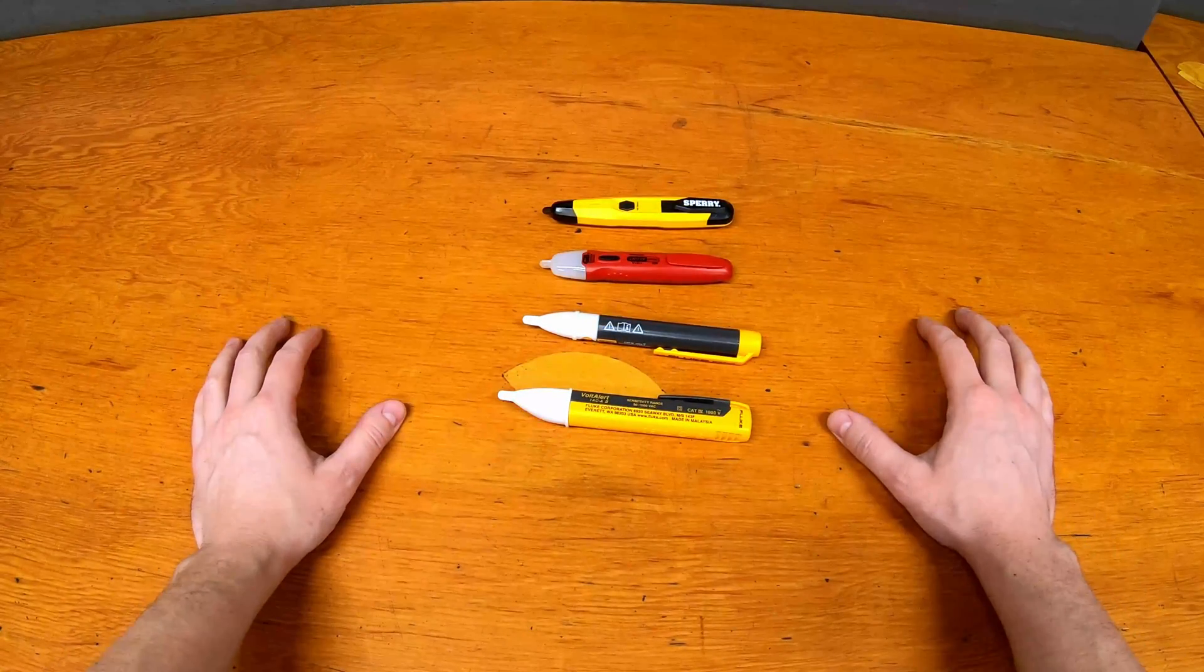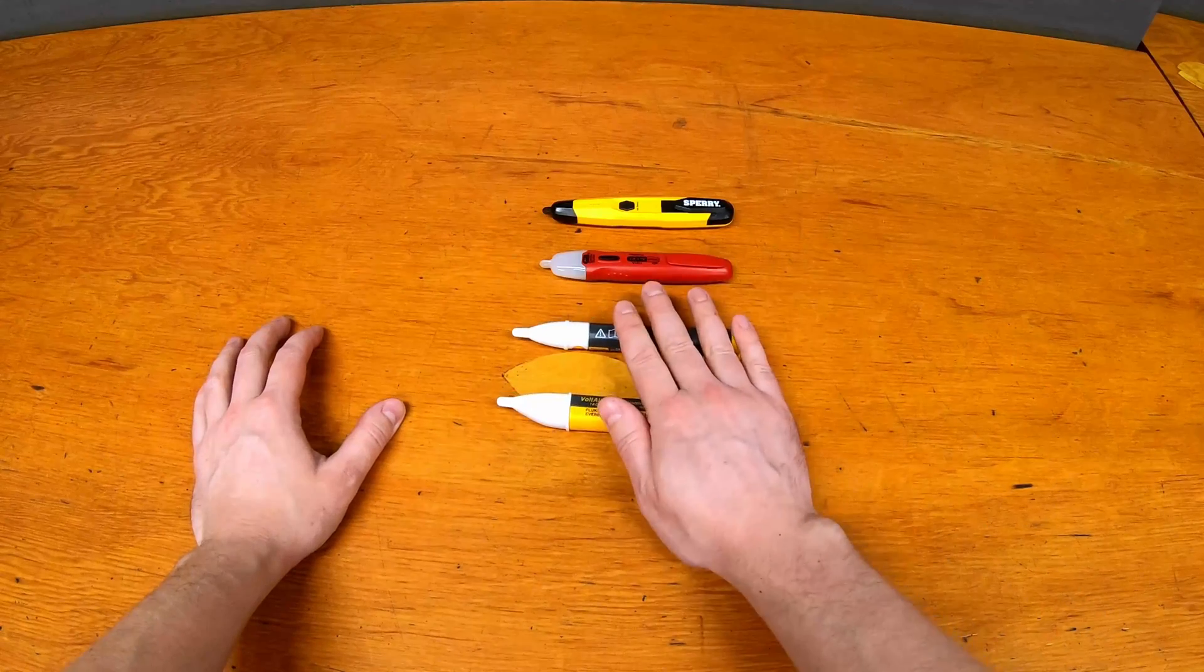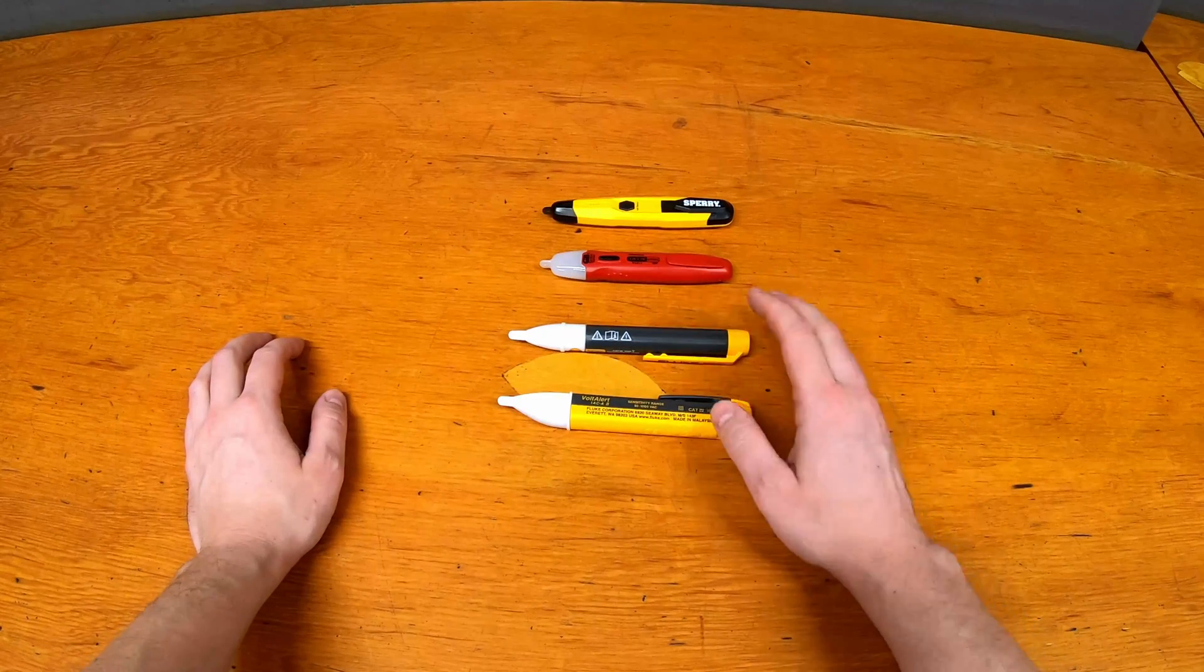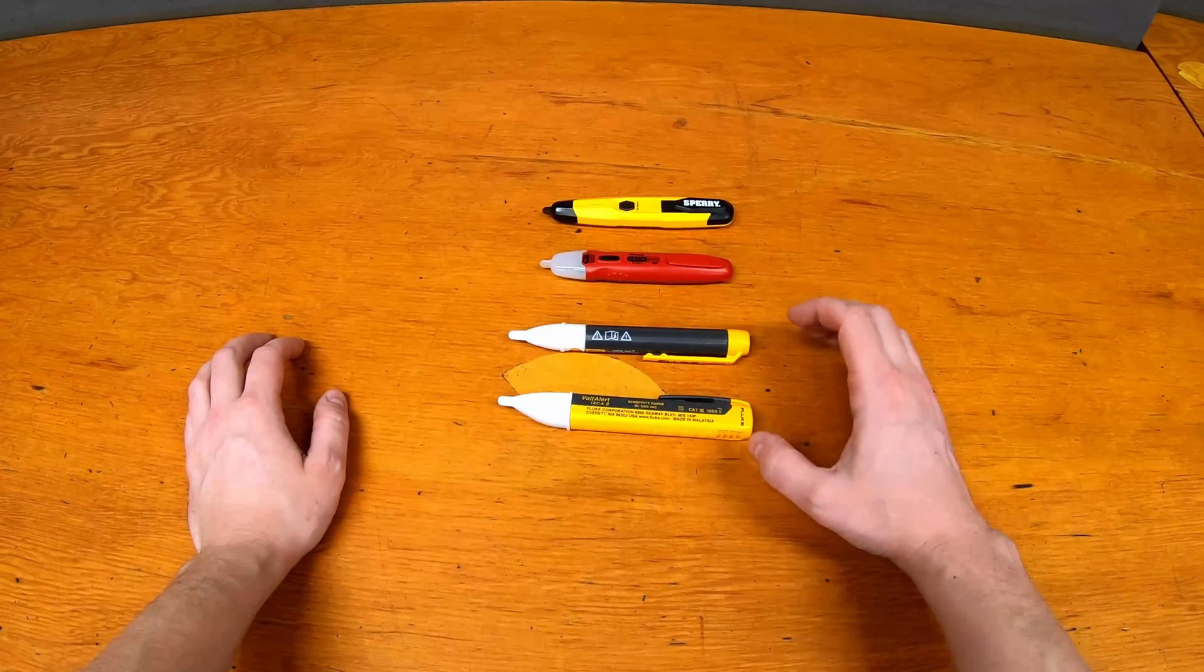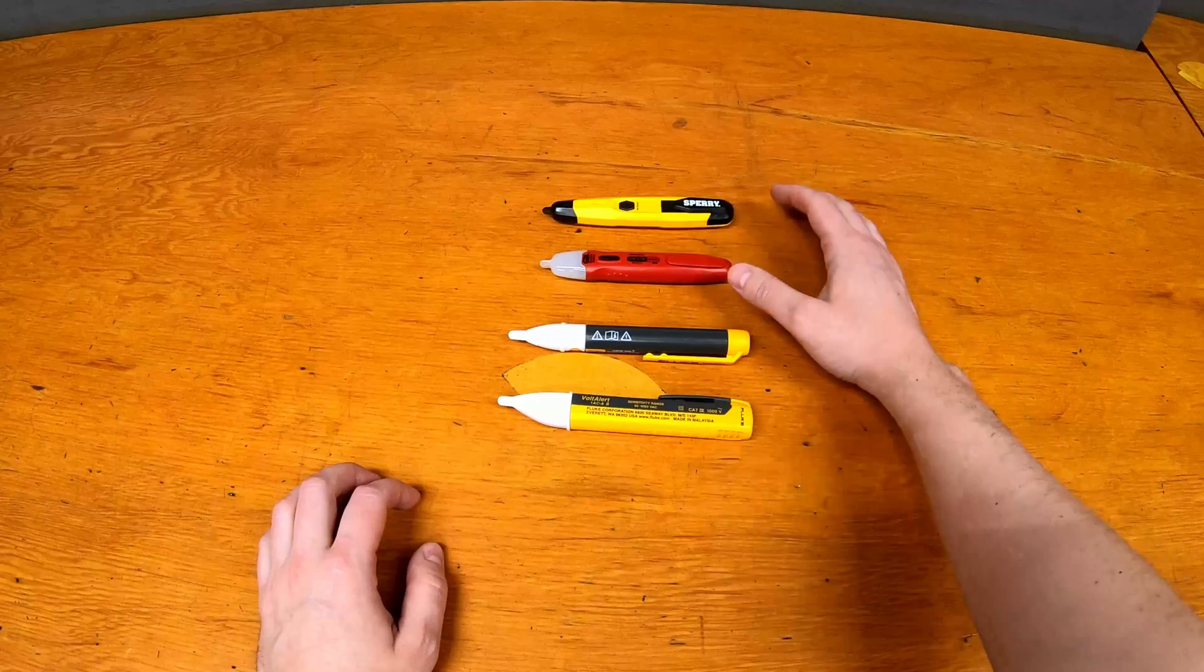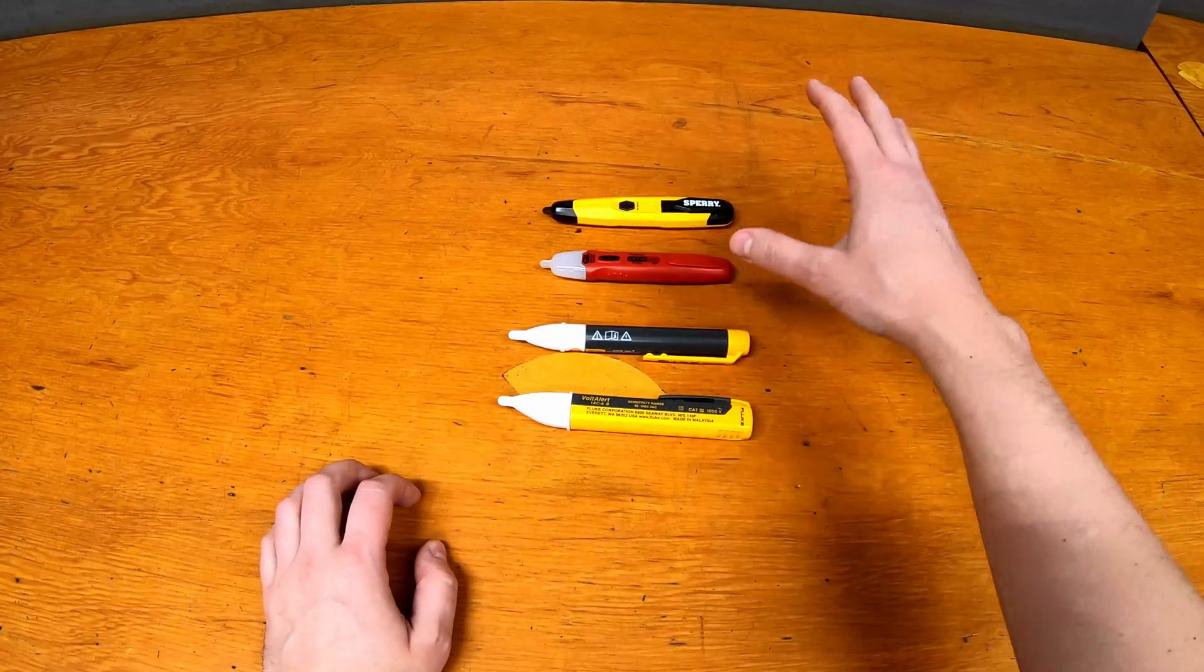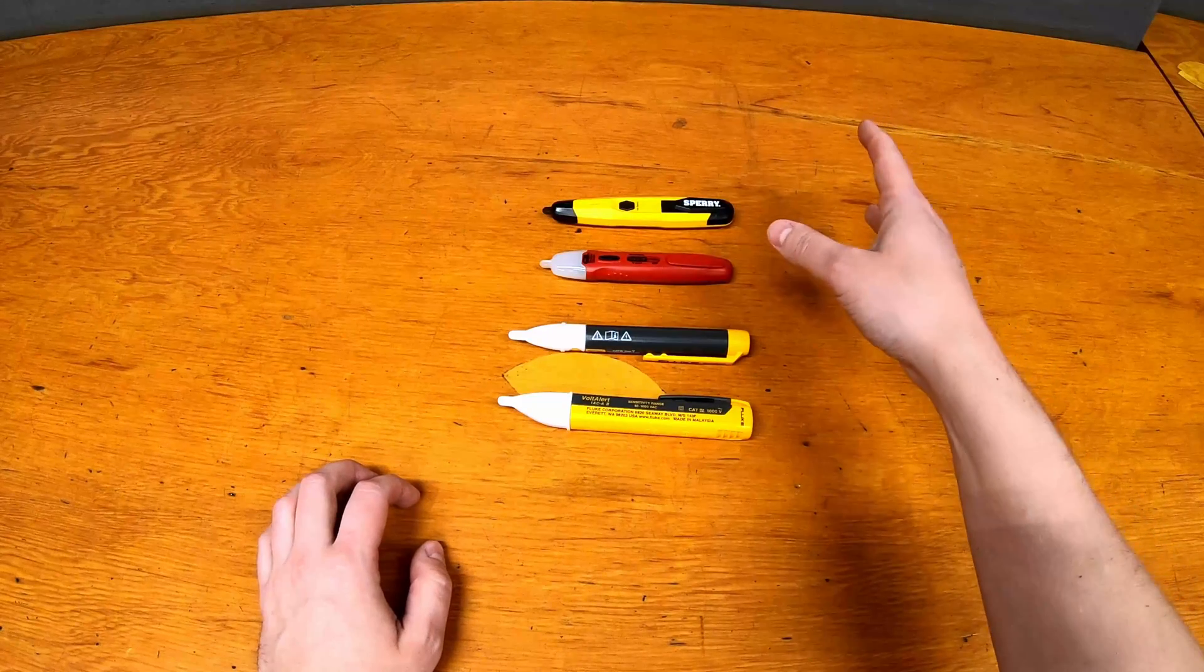Anyway, so if I were to make some recommendations here, potentially look at the flukes if you are doing a lot of tracing or trying to find specific wires in a panel or things like that. So where you really need to hammer down on this specific line, whereas the Sperry and the Gardner Bender and a lot of them like that are good for general area. Make sure you're safe before you go into a panel.